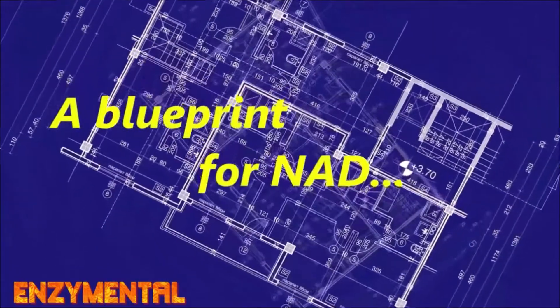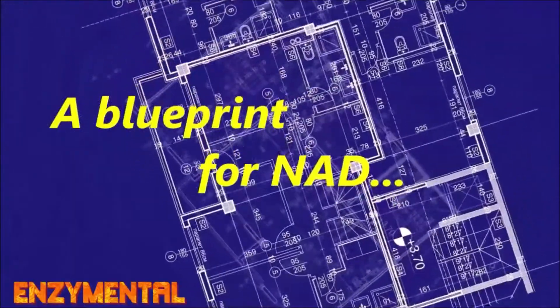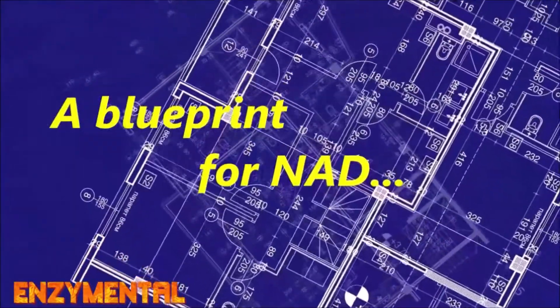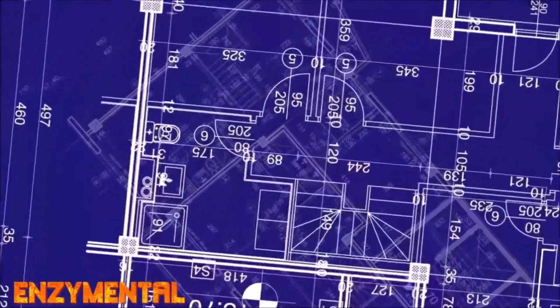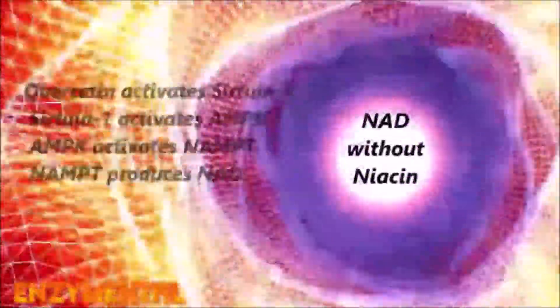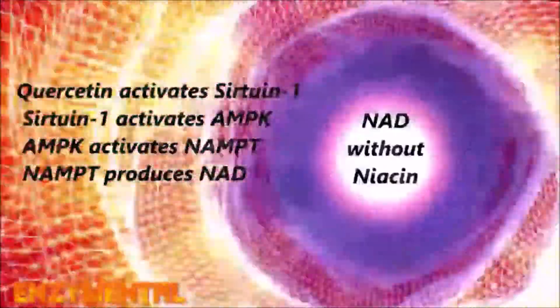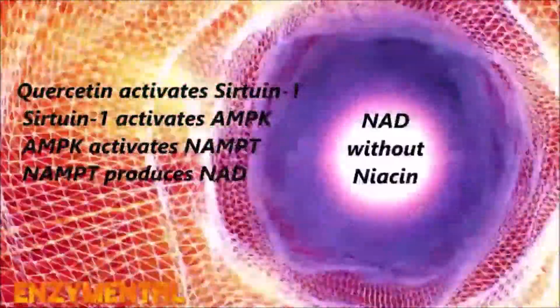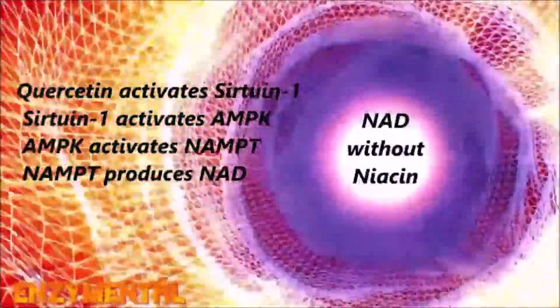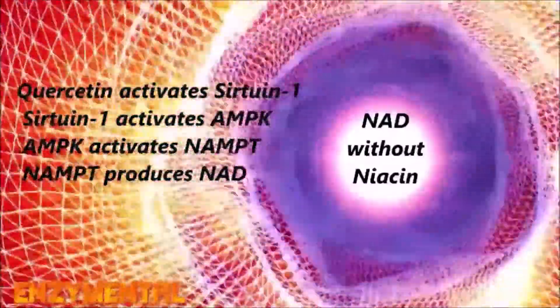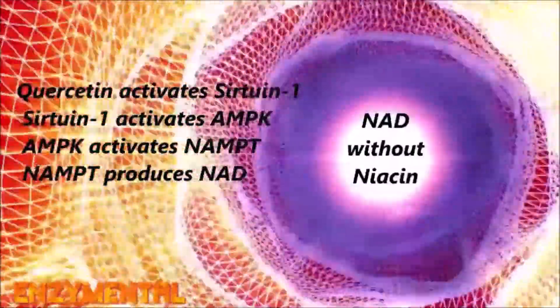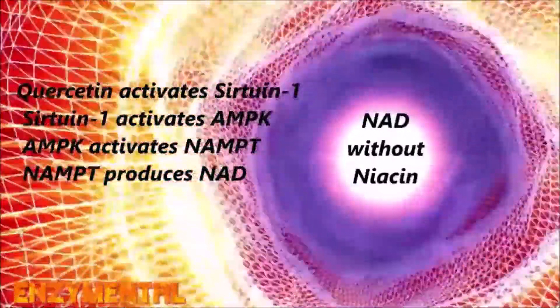While regular exercise and caloric restriction are the best AMPK activators, you can also engage the master switch with the bioflavonoids quercetin and rutin, which themselves are both powerful activators of sirtuin 1, and then by extension AMPK, and finally NAMPT, leading ultimately to an increase in NAD — all without ever taking niacin.